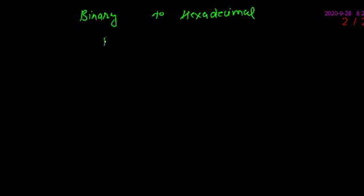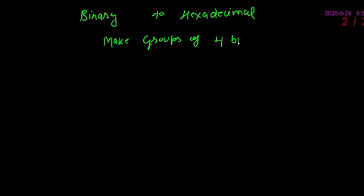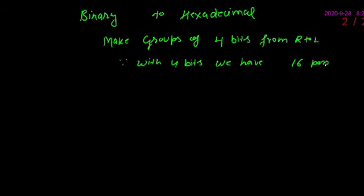चलिए अब हम देखते हैं कैसे एक binary number को उसके hexadecimal equivalent में convert किया जाता है. इसके लिए again, first step में आपने जो grouping करनी है वो 4-4 bits की करनी है, क्योंकि 4 bits को use करके हम 16 different representations achieve कर सकते हैं. Hexadecimal number system में भी 16 अलग-अलग representations होती हैं: 0 to 9 and A, B, C, D, E and F.